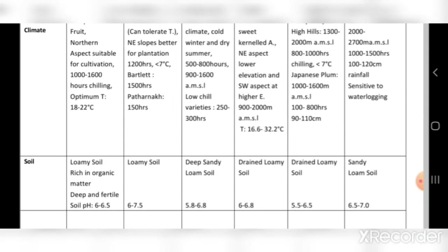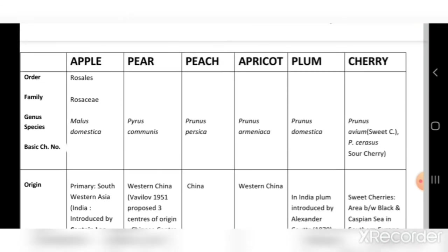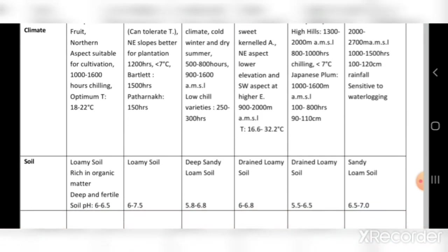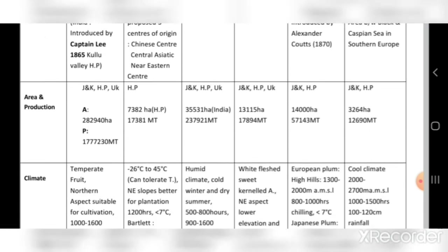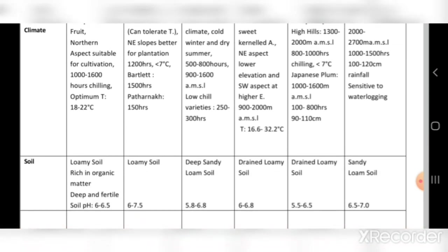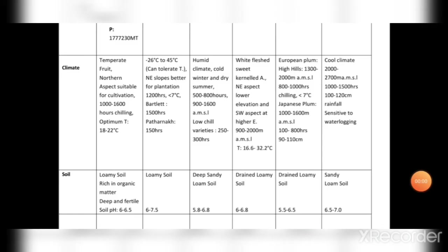For pear, loamy soil with pH 6 to 7.5 is required. Peach and apricot require deep sandy loamy, well-drained soil with pH 5.8 to 6.8. For plum, well-drained loamy soil is suitable; for cherry, sandy loam soil is preferred. pH for plum is 5.5 to 6.5 and for cherry it is 6.5 to 7.